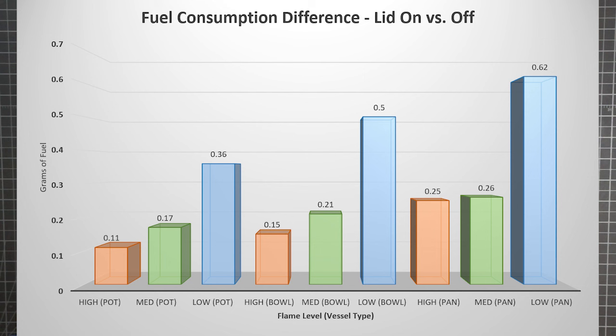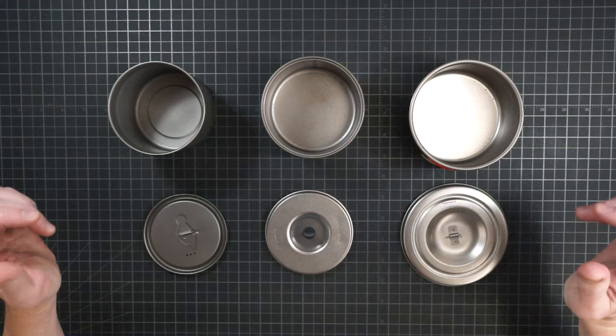Because I'm a visual person, I like to see everything in a graph. This is a chart of the lid effect, in other words, the fuel consumption difference between lid off and lid on, for all three containers at all three flame levels. You can see how, as we go from the narrow pot, to the intermediate bowl, to the widest pan, the fuel savings from using a lid get larger and larger.